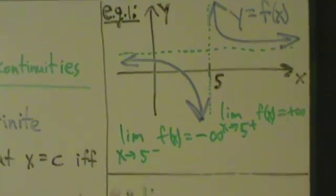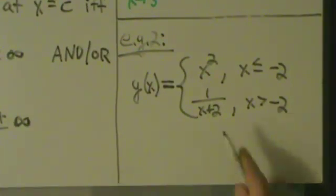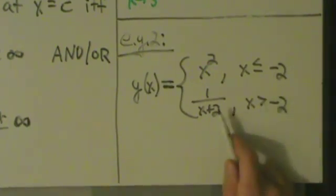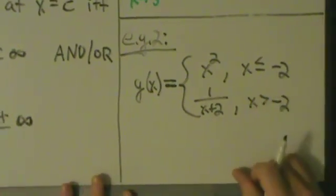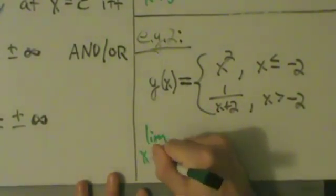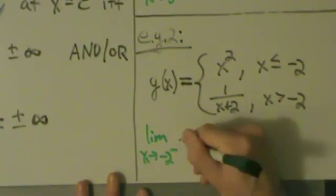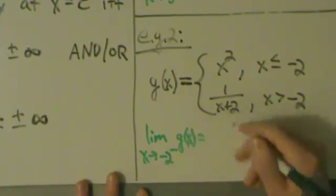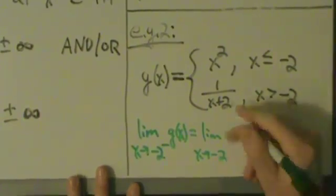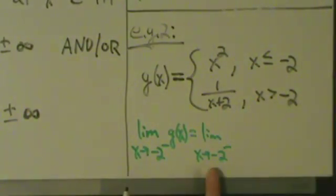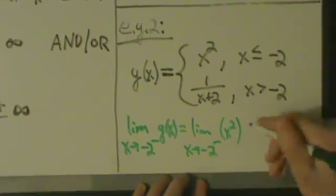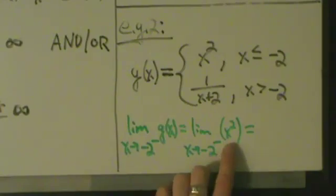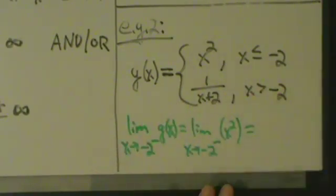Let's look at example 2. g of x equals x squared if x is less than or equal to negative 2, and equals 1 over x plus 2 if x is greater than negative 2. Let's look at what's happening around negative 2. For the left-hand limit: the limit as x approaches negative 2 from the left of g of x — since x is always less than negative 2 when approaching from the left, we use the first piece, x squared. Direct substitution gives us negative 2 squared, which equals 4.